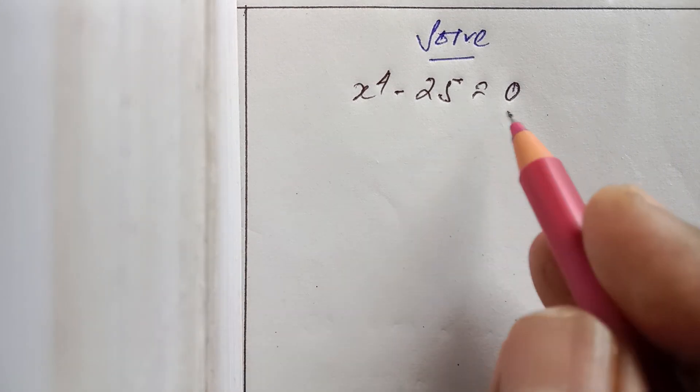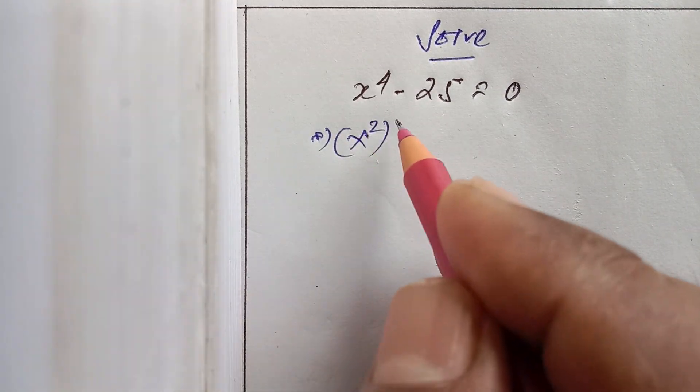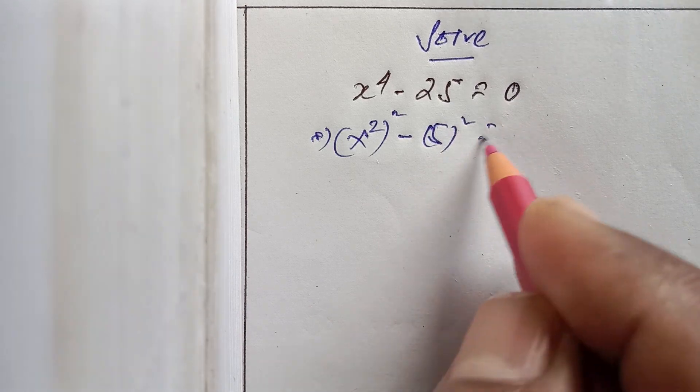Solve x to the power 4 minus 25 equals 0. I can write x to the power 4 as x squared whole squared, and 25 is 5 squared.